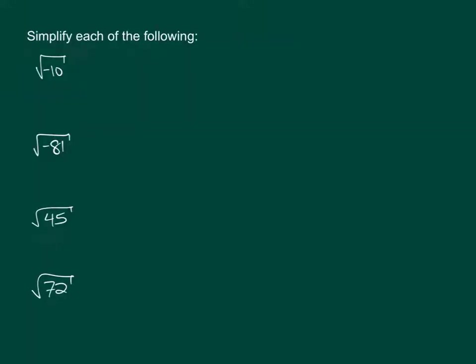Simplify each of the following. In order to simplify these four radicals, it's easiest to have a list of perfect square numbers. These numbers represent the perfect squares of 2, 3, 4, 5, 6, all the way down to 13, and I go to 13 just for good measure.